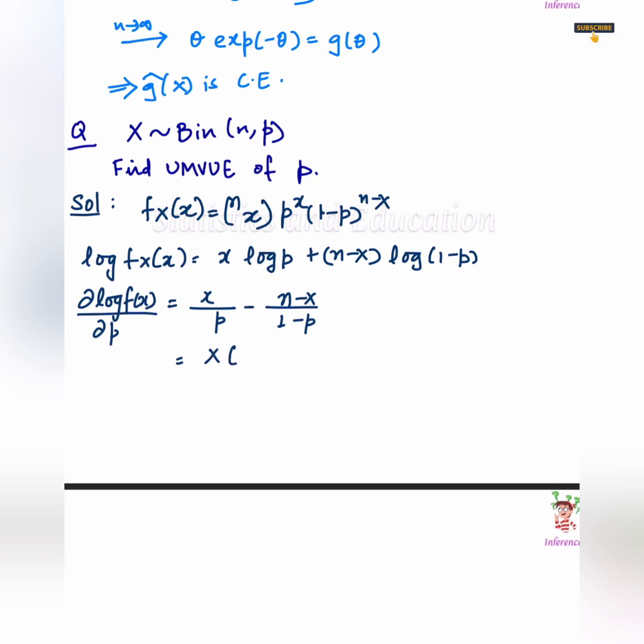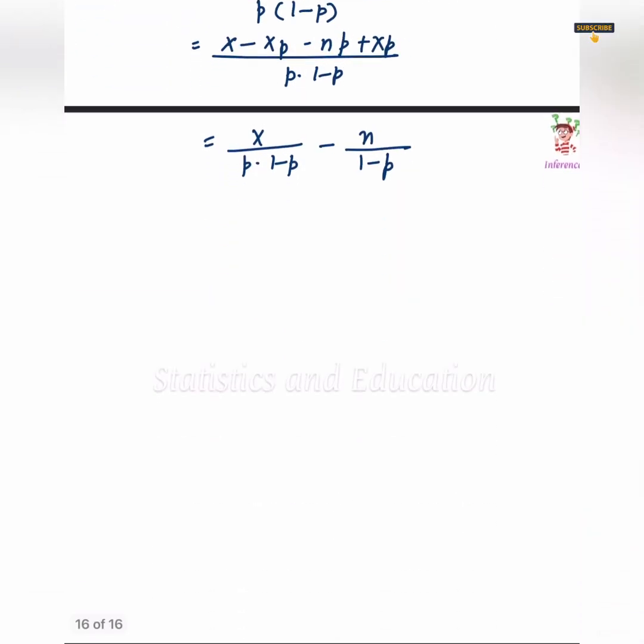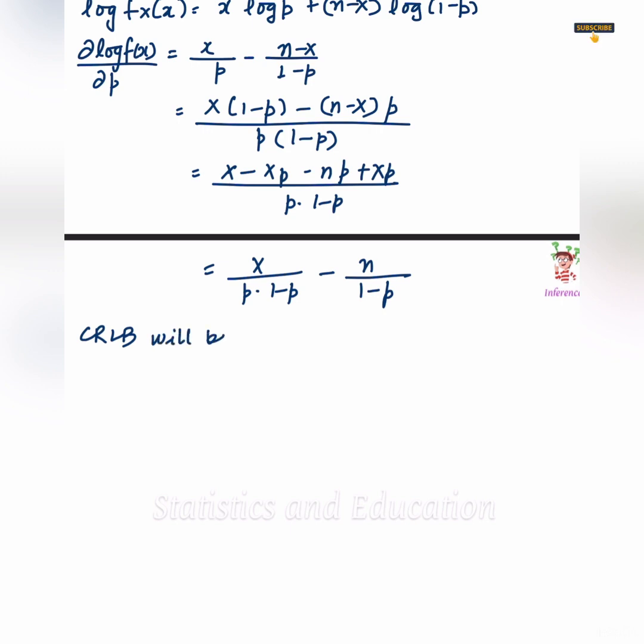Let's see, we have to do the algebraic manipulation here. Again, we'll go back to the property of Cramer-Rao Lower Bound. So, it will be strict unless t equals to Cx for some c, which will imply that p hat equals to x by n, that is an unbiased estimator of p, and x by n achieves CRLB.